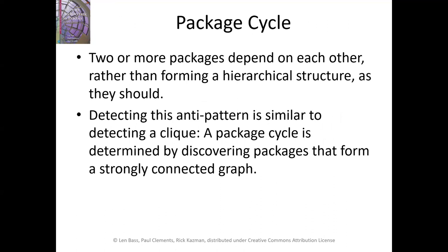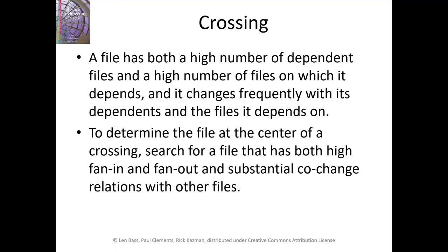The package cycle anti-pattern occurs when two or more packages depend on each other rather than forming a hierarchical structure — again, a subcategory of cyclic dependencies. Detecting it is similar to detecting a cyclic dependency: discover packages that form a connected graph. Finally, a crossing is when a file has both a high number of dependent files and a high number of files on which it depends, and it changes frequently with those files. To identify the file at the center of a crossing, search for a file with both high fan-in and fan-out and substantial code change relations with other files. Some anti-patterns can be discovered using the matrix and static code analysis; others require examining what's being changed simultaneously in version control.